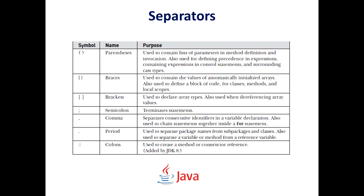Curly braces are used to contain the values of automatically initialized arrays, and also to define a block of code for classes, methods, and local scopes. Brackets are used to declare array types and when dereferencing array values. The semicolon terminates statements — all technical lines in Java end with a semicolon. A comma separates consecutive identifiers in a variable declaration.